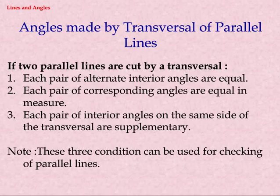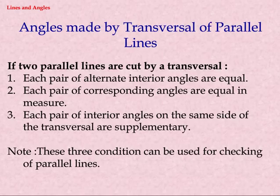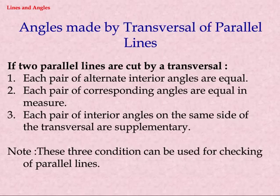Angles made by a transversal of parallel lines. If two parallel lines are cut by a transversal: 1) Each pair of alternate interior angles are equal. 2) Each pair of corresponding angles are equal in measure. 3) Each pair of interior angles on the same side of the transversal are supplementary. Note: these three conditions can be used for checking if lines are parallel.